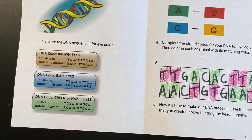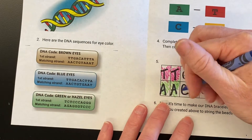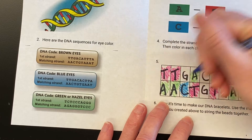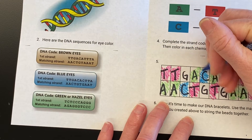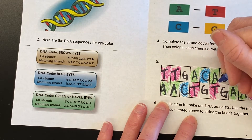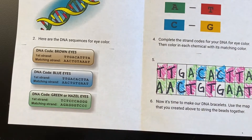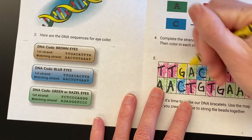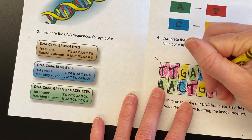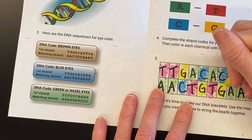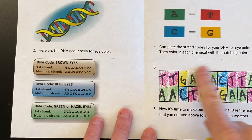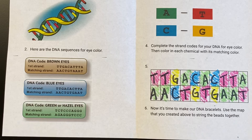Then I'm going to color in my C's, which are blue, and my G's, which are yellow. Now I have created the map I'm going to use for the next part of our project, so go ahead and do that now.